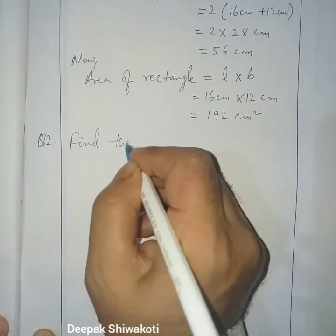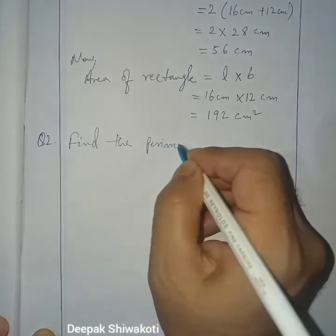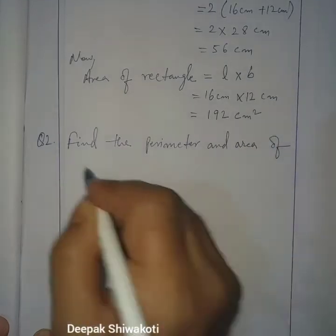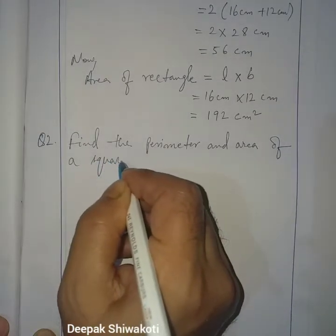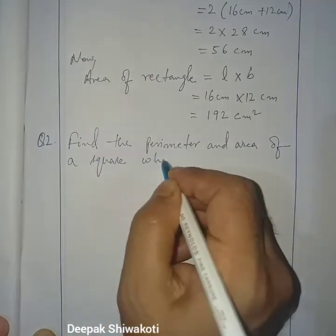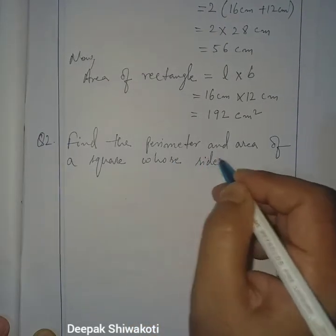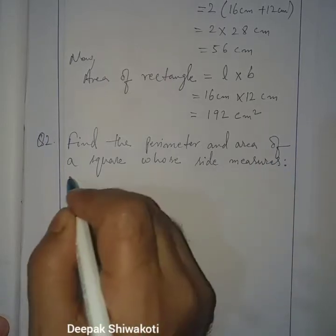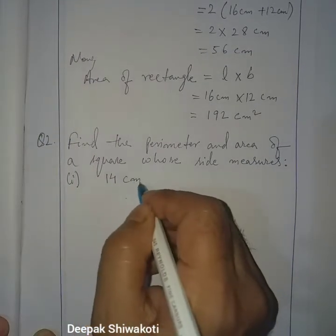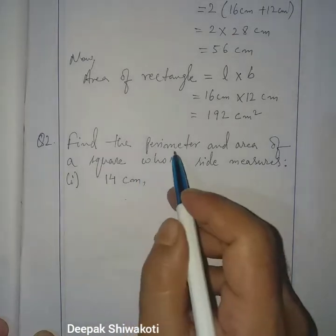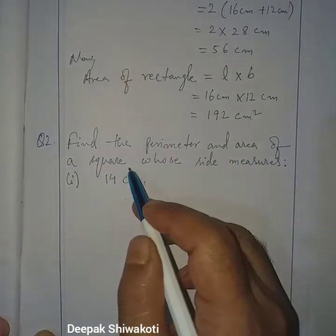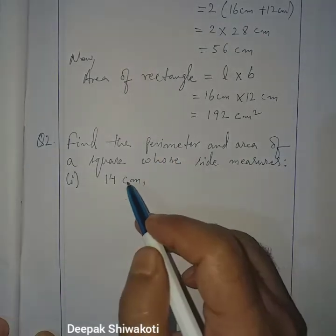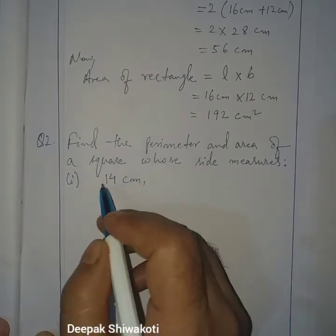Find the perimeter and area of a square whose side measures 14 centimeter. So here we have to find perimeter and area of the square. The given is side equals 14 centimeter.